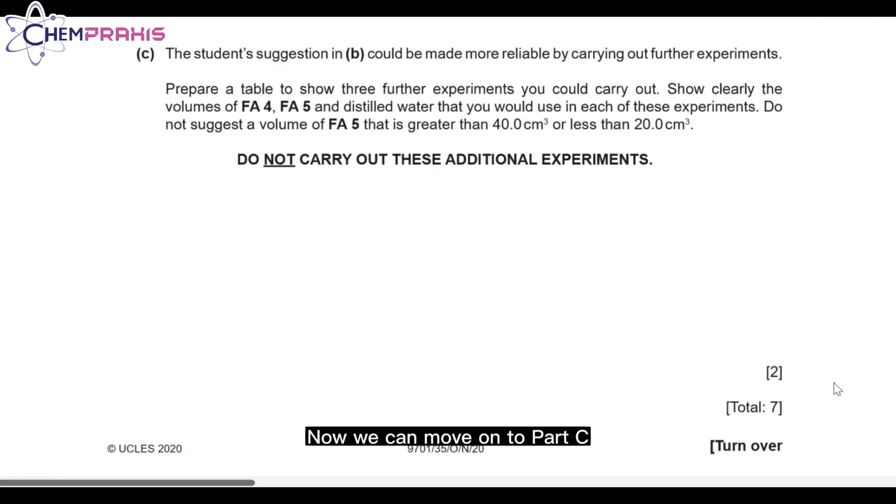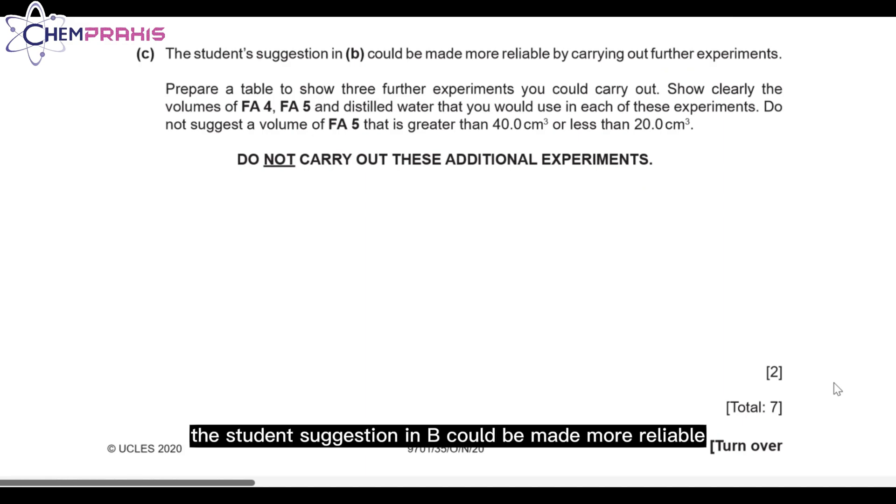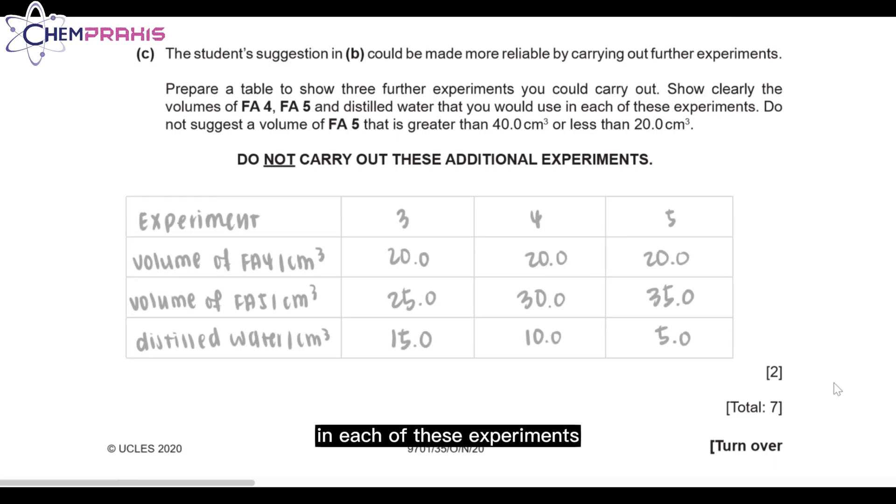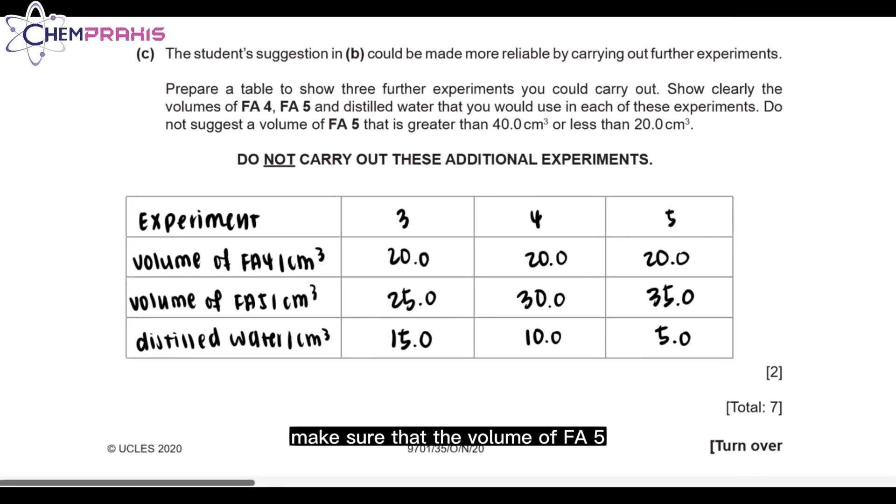Now we can move on to part C. The student suggestion in B could be made more reliable by carrying out further experiments. Prepare a table to show 3 further experiments you'll carry out. Show clearly the volumes of FA4, FA5, and distilled water that you'll use in each of these experiments. Make sure that the volume of FA5 is not more than 40 cm³ or less than 20 cm³.